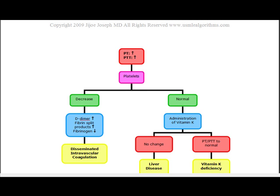Now, like before when we were talking about an increased PT with a normal PTT, here I'm going to be talking about an increased PT as well as an increased PTT. If we see an increased PT and an increased PTT, I want you to look at the platelets. And if the platelets are decreased, it's going to be a consumptive coagulopathy known as DIC.